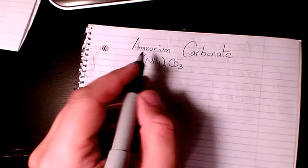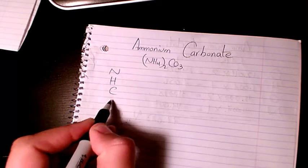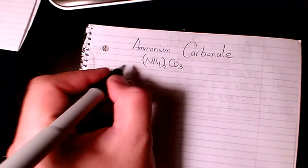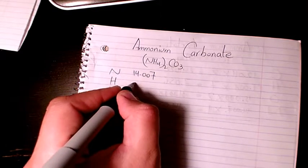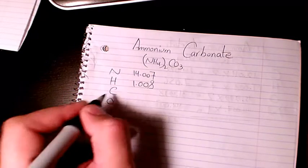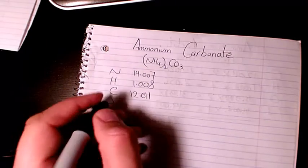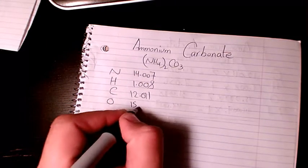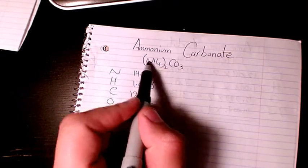We have N, we have hydrogen, we have C, and we have O. Nitrogen is 14.007, hydrogen is 1.008, carbon is 12.011, oxygen is 15.999. We have two nitrogens, two times four which is eight hydrogens, one carbon, and three oxygens.